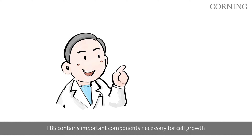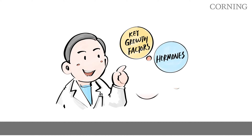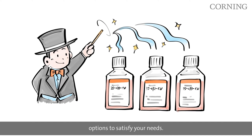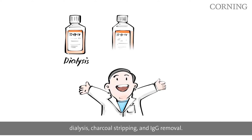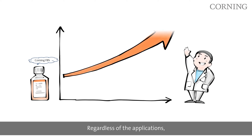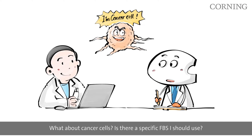FBS contains important components necessary for cell growth, including key growth factors, hormones, and vitamins. For more complex experiments, we offer a wide variety of FBS options to satisfy your needs. Our extensive portfolio of treatments includes dialysis, charcoal stripping, and IgG removal. Regardless of the application, our FBS offerings can deliver optimal results throughout the workflow.